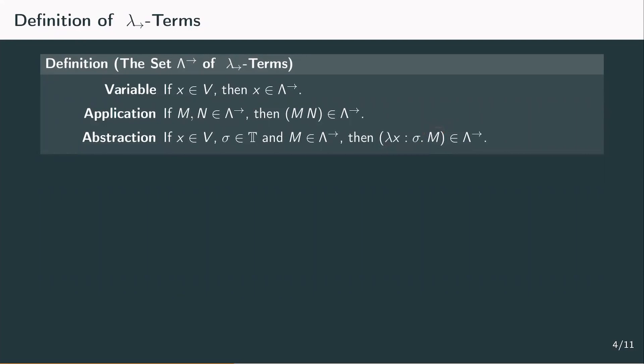Translating the identity function from the untyped into the simply typed lambda calculus is quite simple. We need to choose a type for the input variable — let's say alpha — and write the term as lambda x of type alpha dot x. This term has something of type alpha as input and outputs something of type alpha, so the type of the term is alpha to alpha. If we now apply something of type alpha, maybe a variable y, we get the term (lambda x of type alpha dot x) applied to y, which then has type alpha.